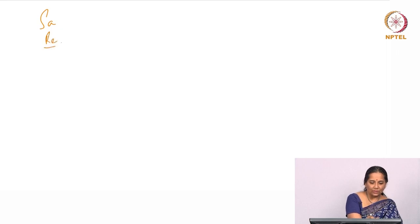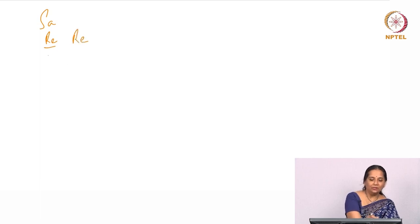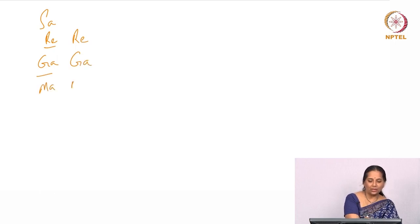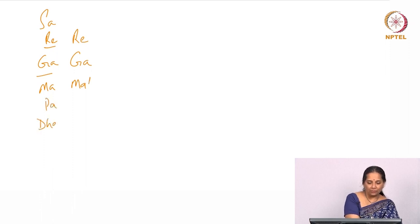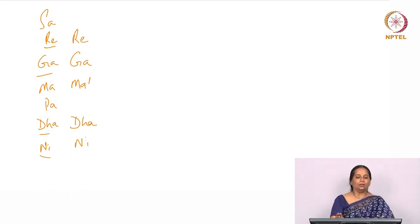In Hindustani music there are 12 swarasthanas: Sa; Re Komal and Re Shuddha; Ga Komal and Ga Shuddha; Ma Shuddha and Ma Tivra; Pa; Dha Komal and Dha Shuddha; Ni Komal and Ni Shuddha. To find how many Sa Re Ga Ma Pa Dha Ni combinations are possible — following the method Venkatamakhin used to derive 72 Melas — Bhatkhande derived 32 Melas for Hindustani music.